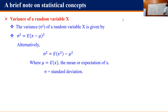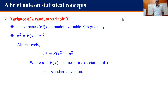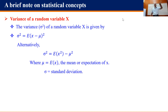Variance: if you have a distribution and you compute y-bar, the variance involves squaring the difference between each value and the mean. Alternatively, the variance can be written as E[X²] - μ². This alternate form σ² = E[X²] - μ² is equivalent to the standard definition σ² = E[(X - μ)²].